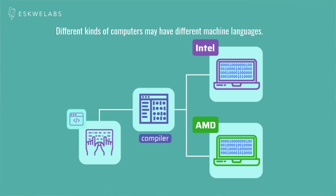What we write is first translated into machine language in what is called a compiler. This is where things get interesting: different kinds of computers may have different machine languages. For example, instructions meant for an Intel processor may not be understood by an AMD one. But a program written in a programming language like Python can be translated into the machine language of different machines, so we can practically run the same program on different types of machines.